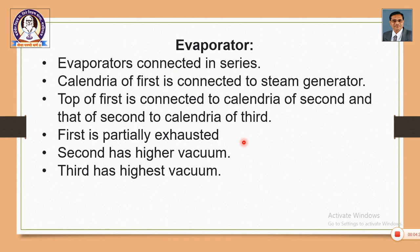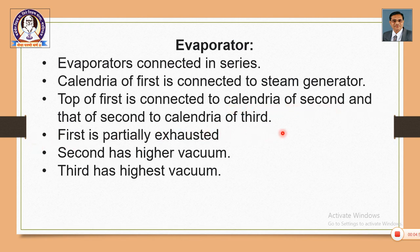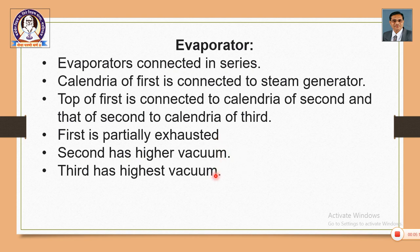The series which is called a multiple effect evaporator is a series of three or four evaporators. When three evaporators are connected in series, it is called a triple effect evaporator. When four are connected in series, it is called a quadruple effect evaporator. The calendria of the first is connected to the steam generator. The top of the first is connected to the calendria of the second, and the top of the second is connected to the calendria of the third. The first evaporator is partially exhausted or evacuated; the second has higher vacuum; the third has the highest vacuum.